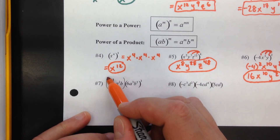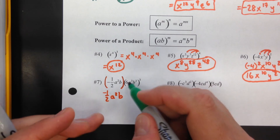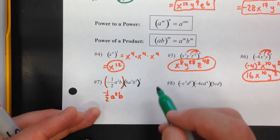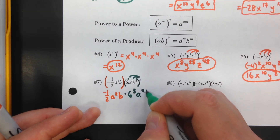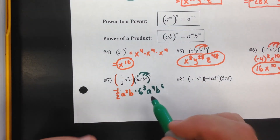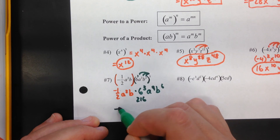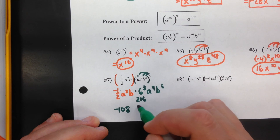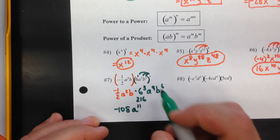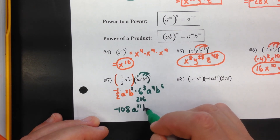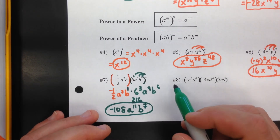For example 7, the first set of parentheses has no outside exponent so just write it without parentheses, but the second set is raised to the third power, so distribute that exponent inside: 6 to the third, a to the ninth, b to the sixth. Then multiply the coefficients: negative one half times 6 to the third (which is 216) equals negative 108. For the variables: a to the 2 plus 9 is a to the 11th, and b to the 1 plus 6 is b to the seventh. Result: negative 108 a to the 11th b to the seventh.